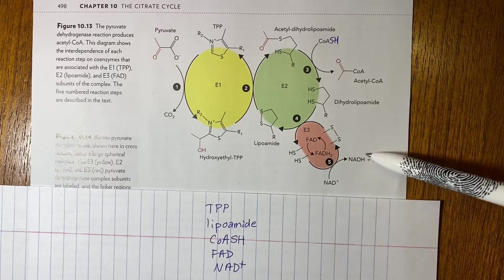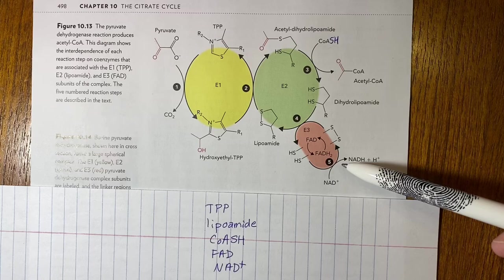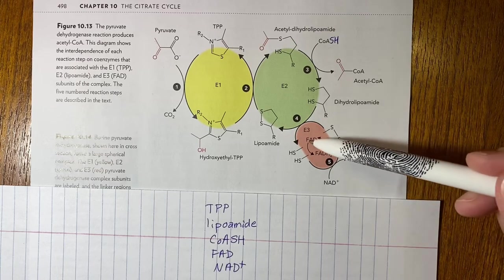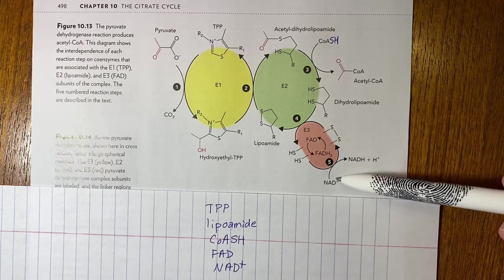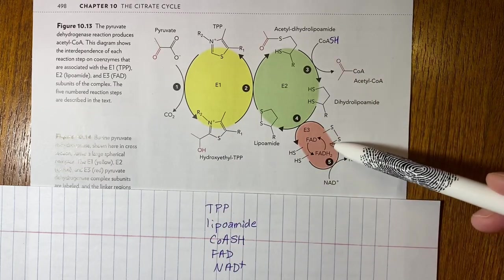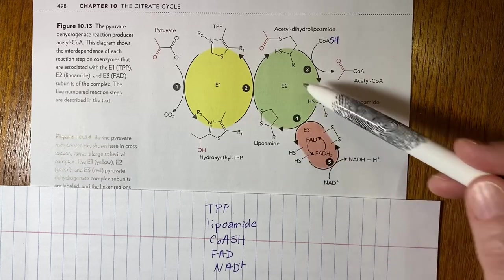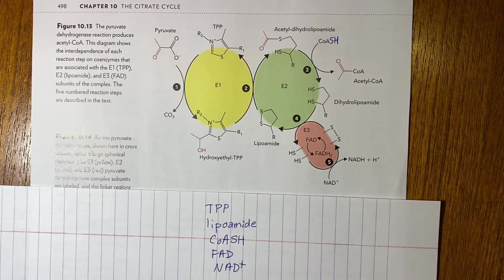And then NADH floats away and a new NAD+ comes in for the next round. So FAD and NAD+ are actually not directly involved in this catalysis. They are there to re-establish the disulfide bond so this can do another round of catalysis. That's essentially what they do.